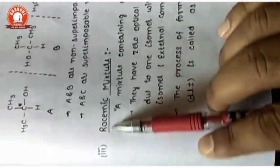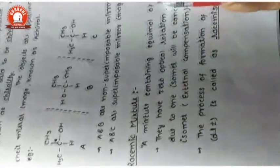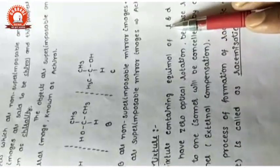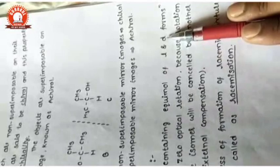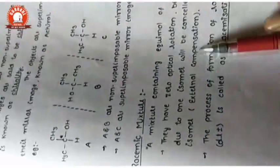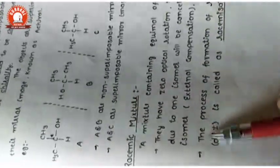A racemic mixture is a mixture of equimolar amounts of L-form and D-form — 50% L and 50% D. It has zero optical rotation because the D-form rotates clockwise and the L-form rotates anti-clockwise, and these cancel each other out. The zero rotation is due to external compensation — this is an important objective question.